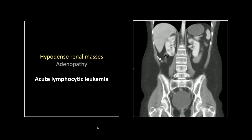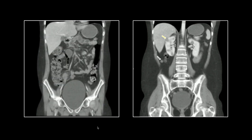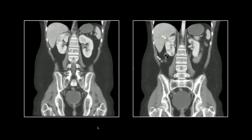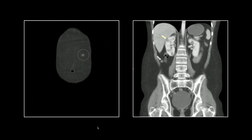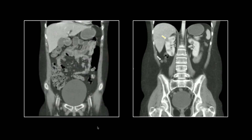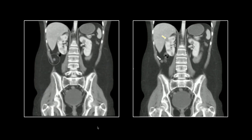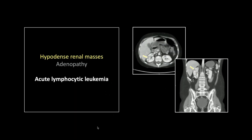On the coronals, again: hypodense masses in the kidneys, that retroperitoneal node, the subcutaneous one, and the iliac node. The renal masses — hypodense, rounded, bilateral — are pretty classic for lymphoma. So that is acute lymphocytic leukemia manifesting as do most lymphomas.